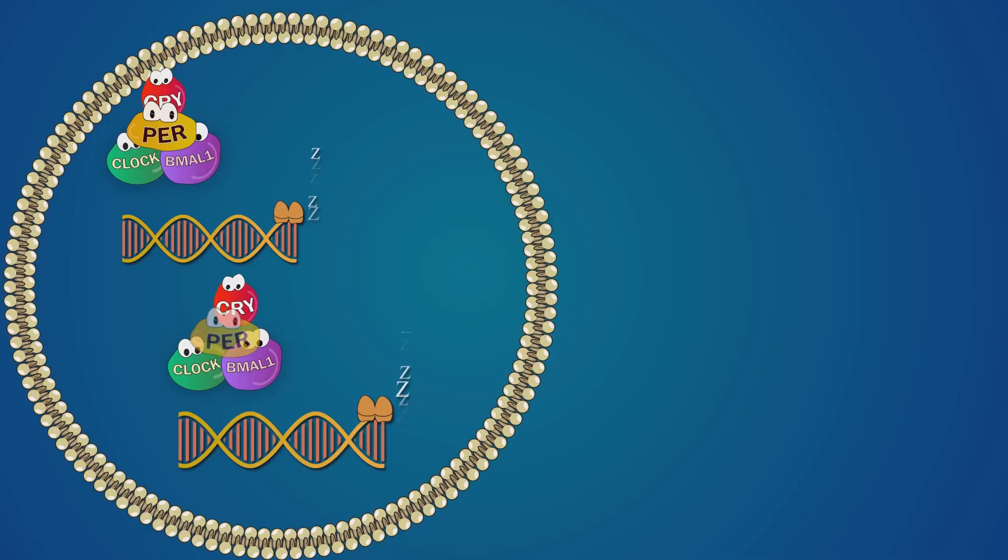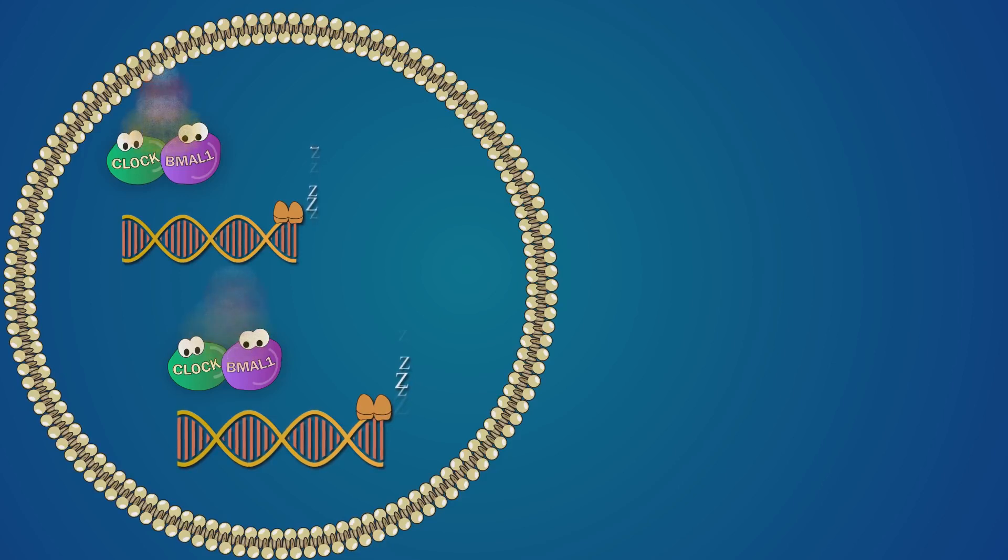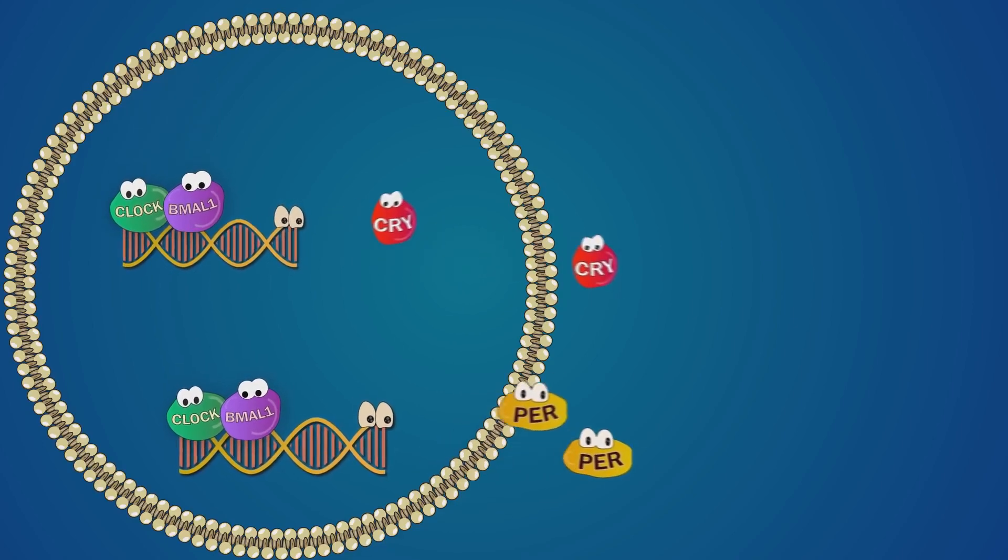This is actually known as transcriptional-translational feedback loop. After the production is stopped, the per and cry complexes slowly degrade inside the nucleus. The degradation allows bmal1 and clock to rebind to the DNA and the whole cycle starts again.